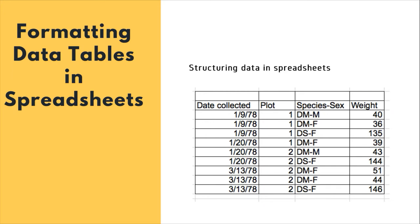Structuring data in spreadsheets: the cardinal rule of using spreadsheet programs for data is to keep it tidy. Put all your variables in columns — the things you're measuring, like weight or temperature. Put each observation in its own row. Don't combine multiple pieces of information in one cell. Leave the raw data raw — do not change it. Export the clean data to a text-based format like CSV, which is comma-separated values.